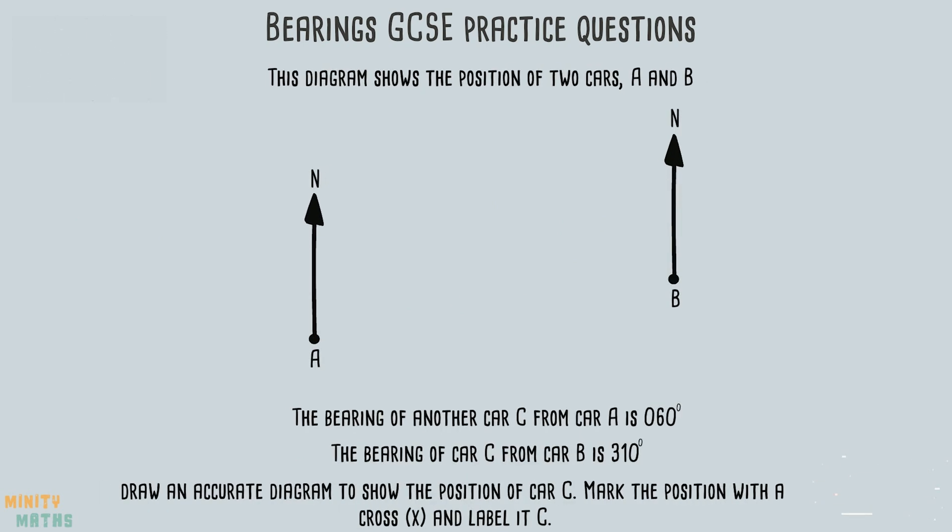Now let's look at a different type of bearings question you may find in an exam. This question requires you to accurately draw the position of a third car C on the diagram. This means you will need to use a protractor.